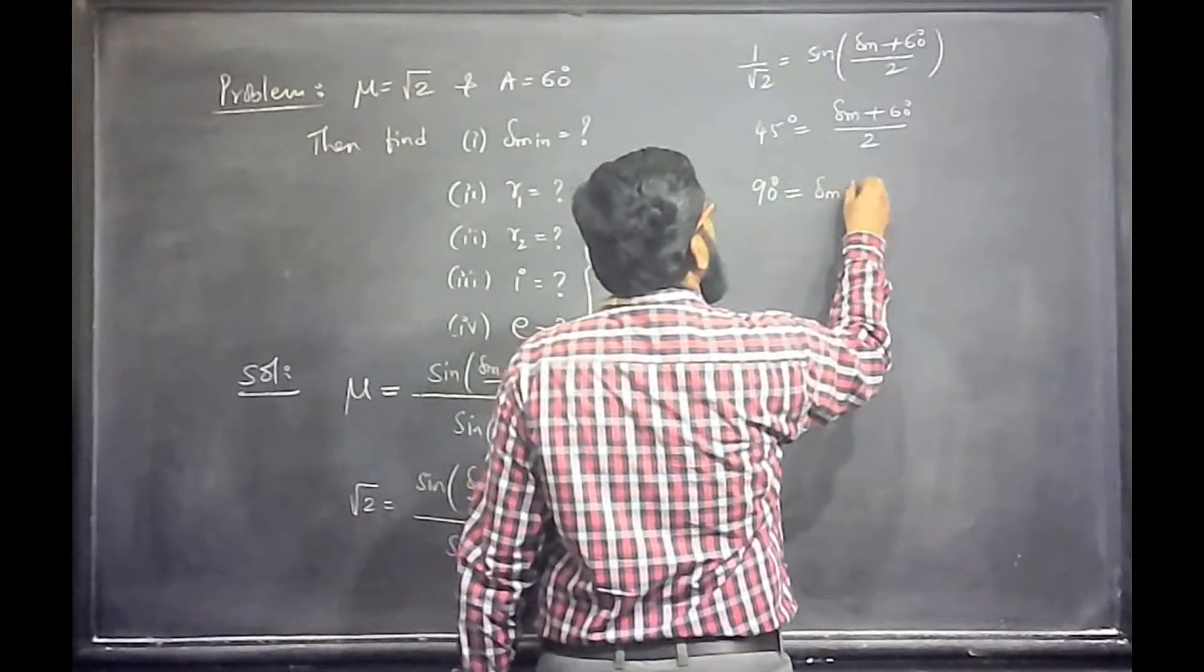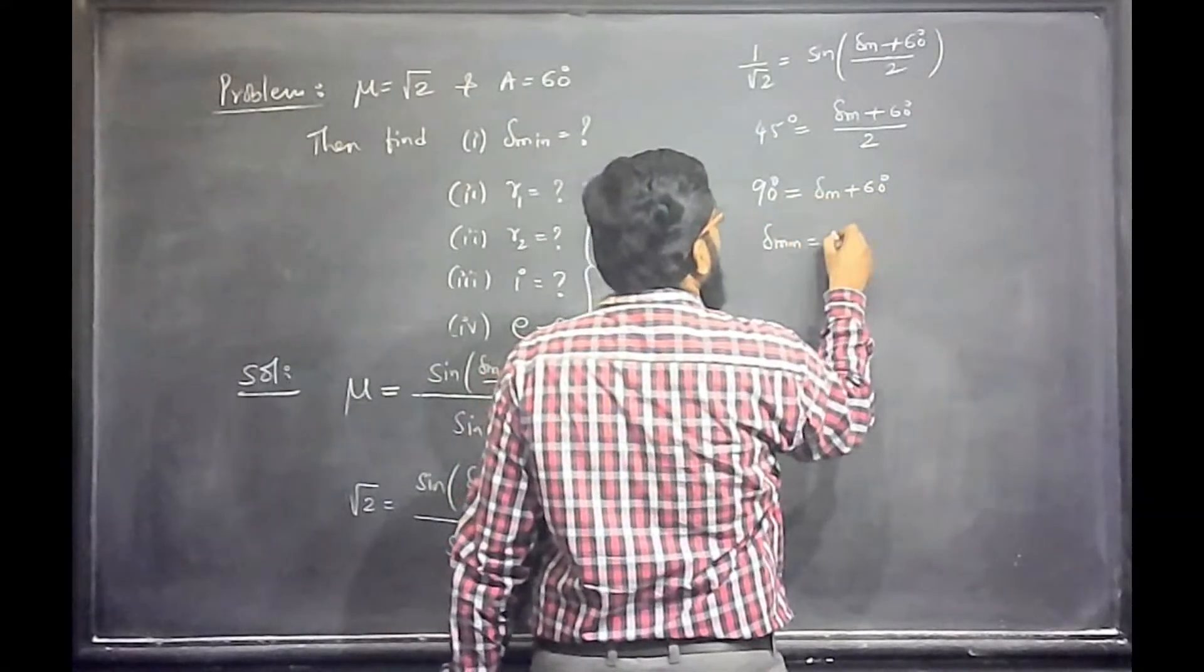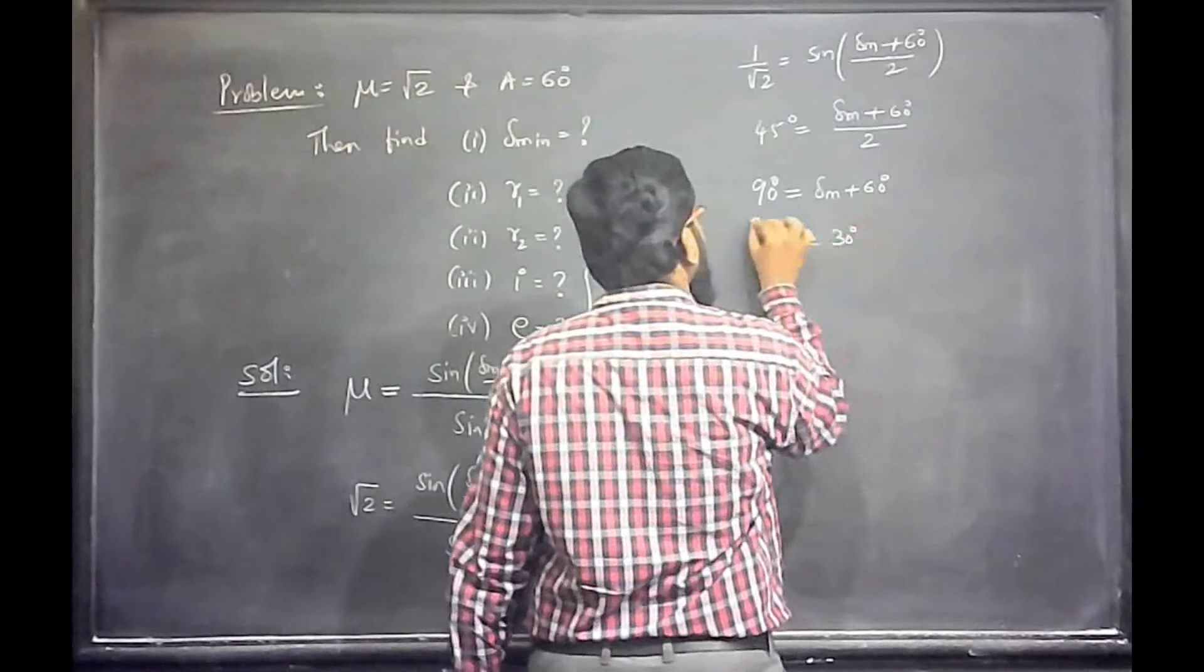That is δm plus 60 degrees. Then this is 90 minus 60, that is 30 degrees. This is the delta minimum deviation.